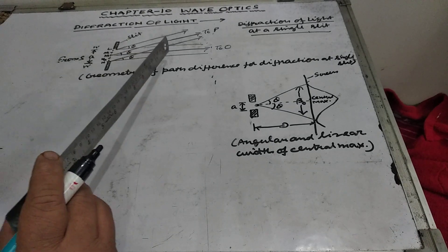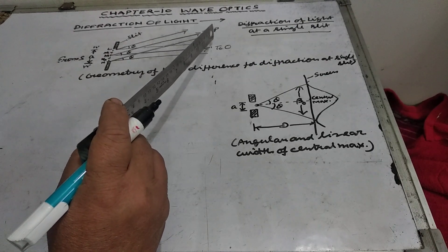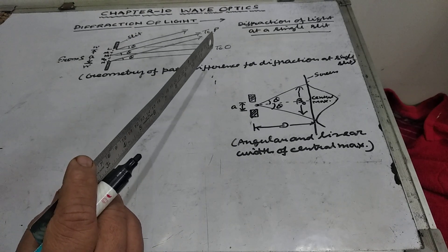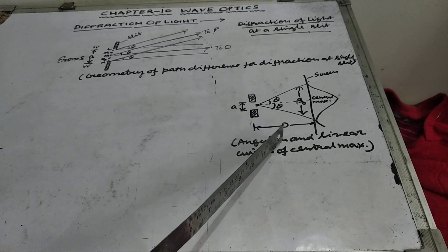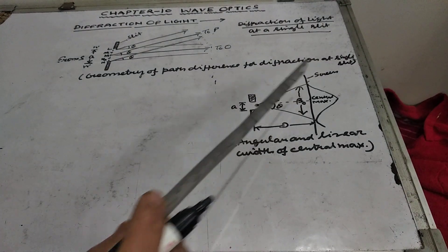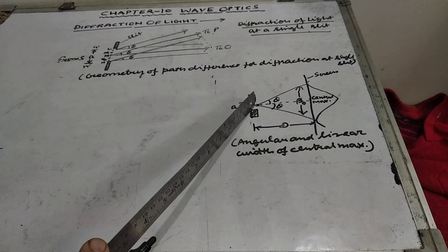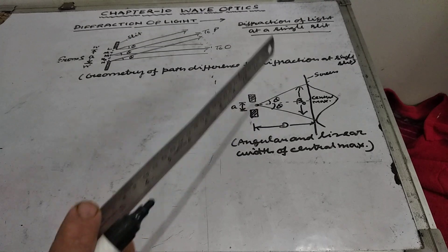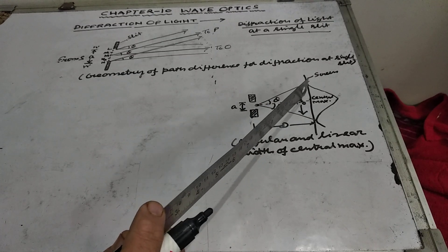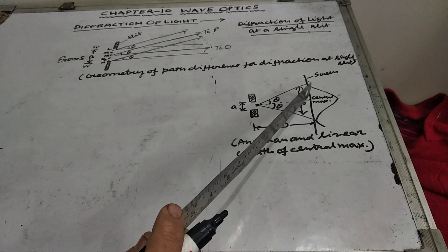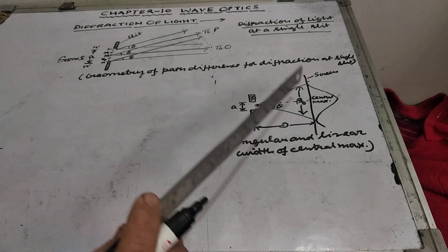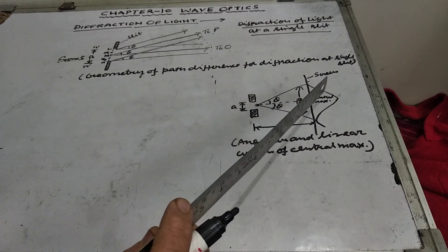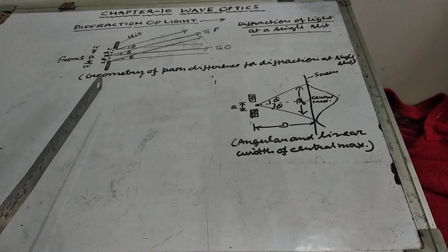The diffraction pattern consists of a central bright band surrounded by alternate dark and bright bands, obtained on a distant screen. This is the central bright band — central maxima — and alternate dark and bright bands are observed on the distant screen. The width of the slit is A, and as the wavefront incident on the slit diffracts in all directions, it produces a central bright band with alternating dark and bright bands on either side.